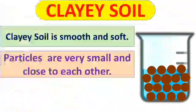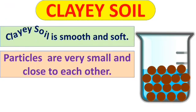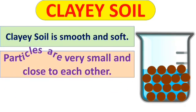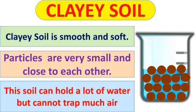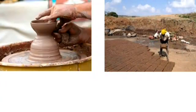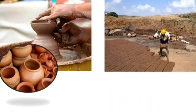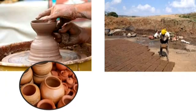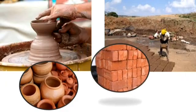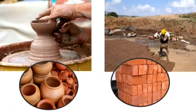Next is clay soil. Clay soil is smooth and soft. Particles of clay soil are small and close to each other, as you can see in the picture. The soil holds a lot of water but cannot trap much air. Clay soil is useful to us — it is used by potters to make toys and pots.